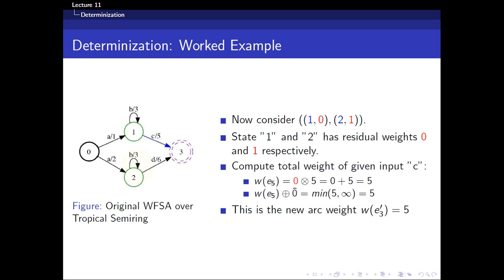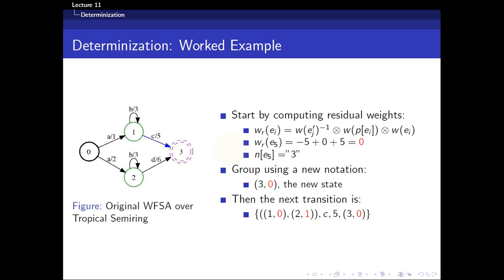Next, we consider all transitions from this grouped state with input 'c'. The weight computation gives 0 times 5 = 5, so the new arc weight is 5. The multiplicative inverse of 5 is −5. The residual weight is: −5 times 0 times 5 = 0. The transition ends at state 3, so we form the tuple (3, 0) as the new destination. The transition has input 'c', weight 5, ending in state (3, 0).